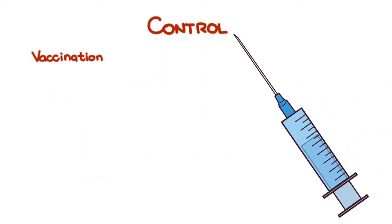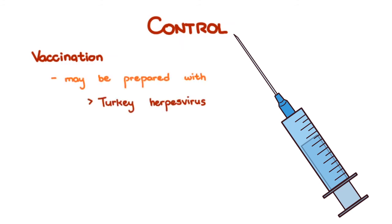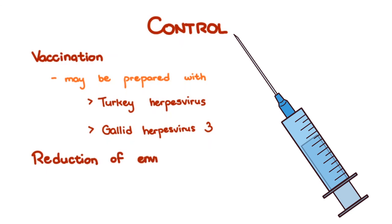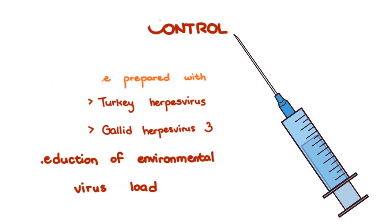Vaccination is the principal strategy for control. The vaccine may be prepared with turkey herpesvirus or Gallid herpesvirus 3. It doesn't necessarily prevent the spread, but can mitigate clinical disease, particularly the neoplastic lesions in the viscera. Peripheral neurologic signs can still occur, but at a reduced incidence. Reduction of environmental virus load by thorough cleaning, disinfection, and proper biosecurity measures is also beneficial.